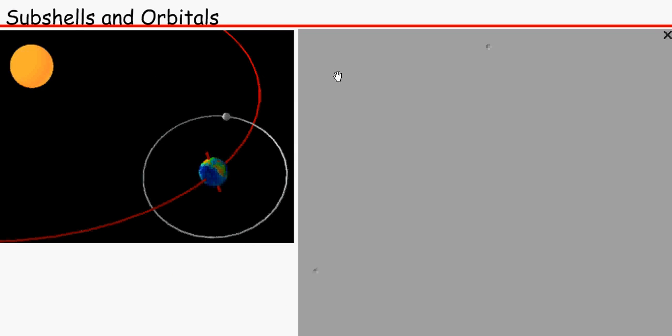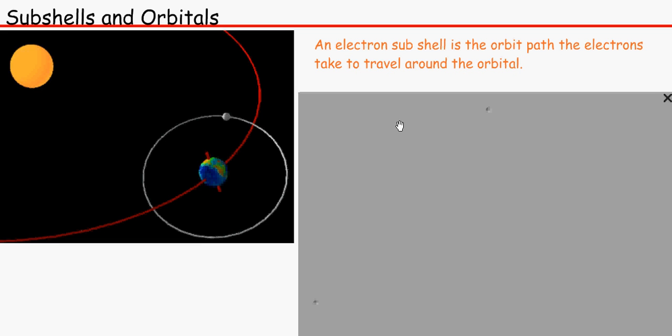Moving on. A sub-shell, because there are shells within shells, can you believe that? Sub-shells is the orbit path the electrons take to travel around the orbital. See, that's another word for you. You might not know what an orbital is, but we're going to go through an orbital just a moment.